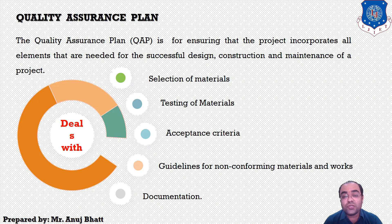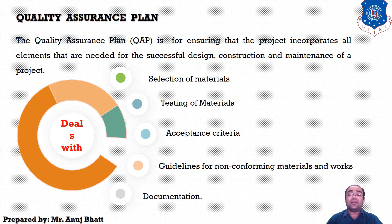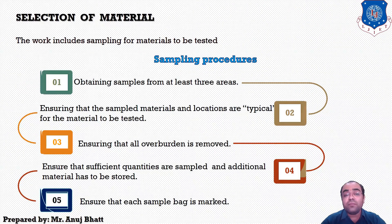The Quality Assurance Plan (QAP) should deal with all aspects: selection and testing of materials, acceptance criteria, guidelines for non-conforming material and works, and documentation. Considering all these things, the Quality Assurance Plan can be established and executed. Starting with the first stage, that is the selection of material.